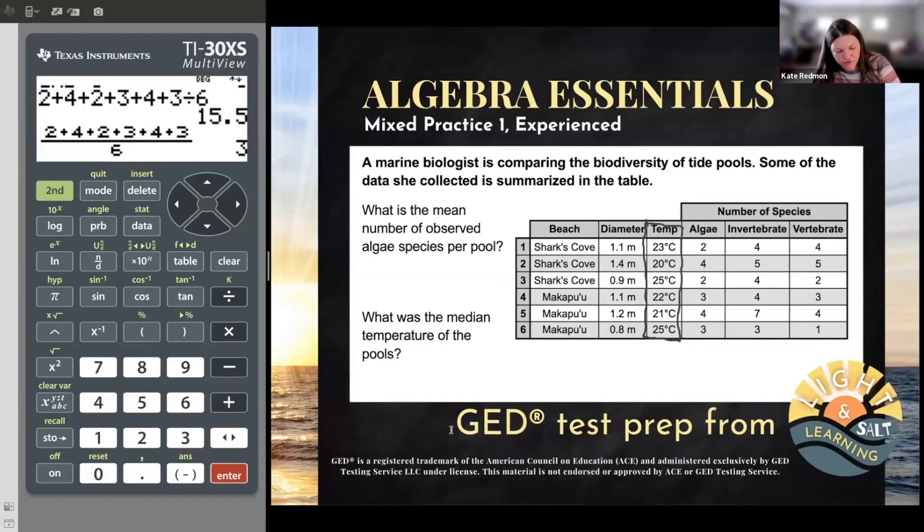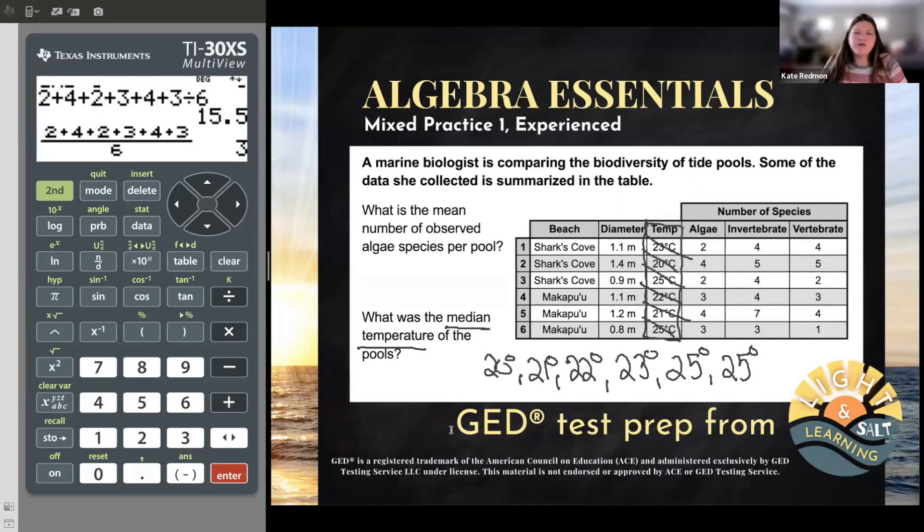So if we're looking for the median temperature of the pools, we got to take those temperatures. And the first thing we got to do is we got to order that list. Let's put them in order. So smallest value I see is 20. And then after that, we've got a 21, 22, and then a 23. And then I have two 25s. And a lot of students think, oh, I won't repeat. You do need to repeat. If there's a bunch of 25s, you're going to write down a bunch of 25s. So there's my numbers. And you can see what happens here. If I take off one from the front and one from the back, one from the front and one from the back, I do have an even number of data items this time. So I do have two numbers left in the middle.